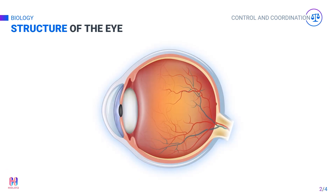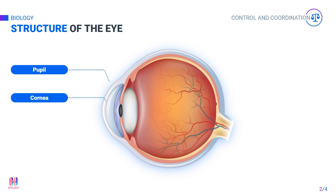This transparent membrane-like structure at the front of the eye is the cornea. It bends or refracts the light so that it enters the eye. Now take a look at the pupil — it is a tiny hole that acts as the entry point for light into the eye.